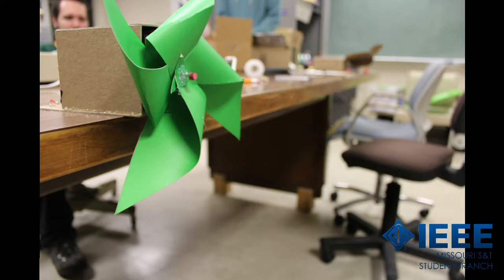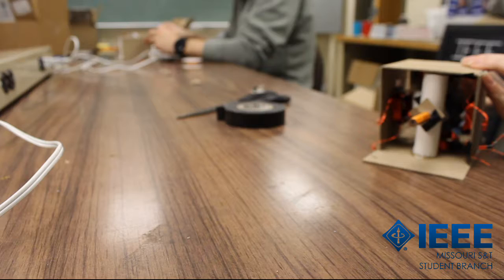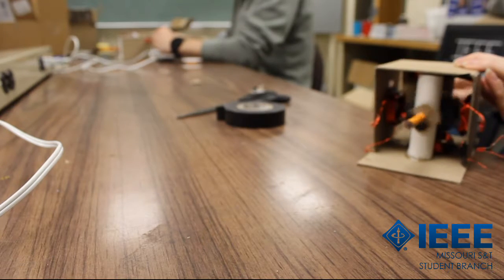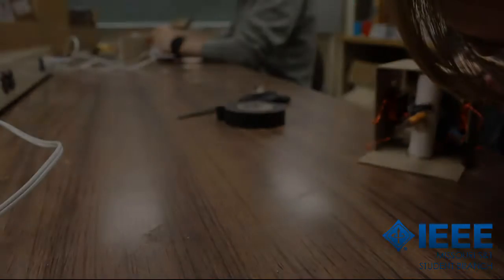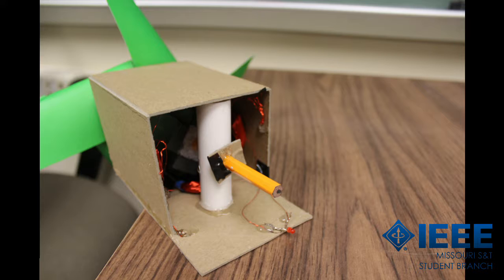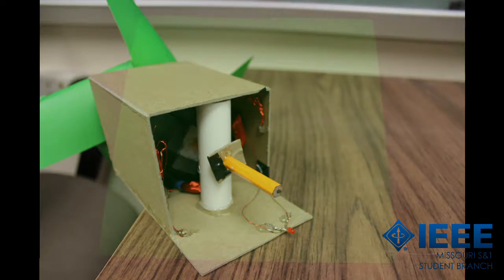We're going to now test our windmill before we secure the wiring we just did. Spin the pencil quickly and you should see the LED light up. If the LED does not light up, try making your connections tighter. Once your LED is lighting up, you can secure the connections with glue or tape to the cardboard of the windmill. You can also solder the connections to make them more permanent if you wish.